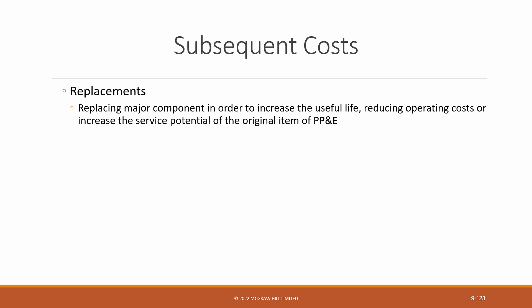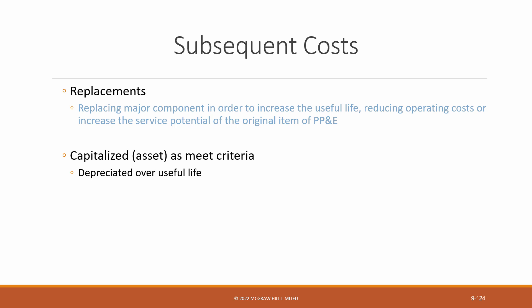Some examples: an entity replaces all the tires on their transport trucks, or an airline replaces all the seats on their airplanes, or a corporation replaces all the windows in their head office. All of these are examples of replacements. Replacements are capitalized because their costs are measurable and they improve the future economic benefit of the original asset by improving its service potential, its ability to generate revenue in the future. They're recognized either as part of the original asset, but more often as a separate component, a separate item of PP&E. They are then depreciated over their useful life.